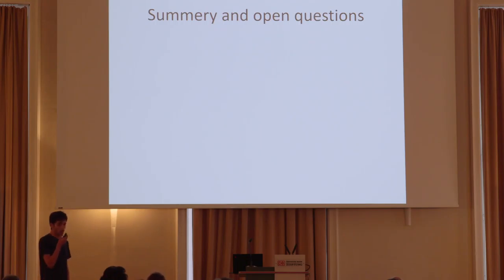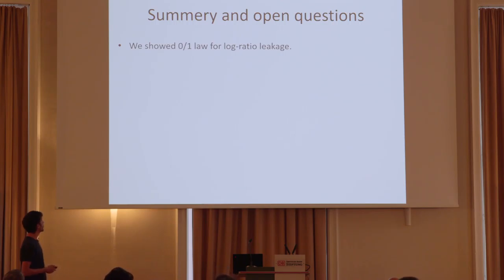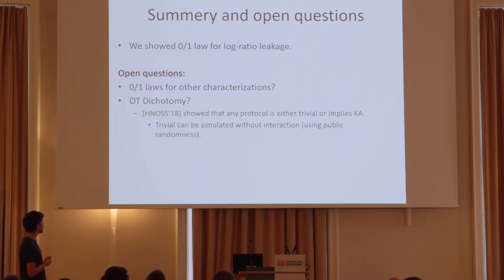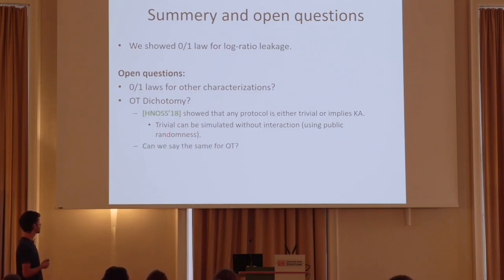To summarize, we showed a 0-1 law for log-ratio leakage and an application for private computations. For open questions, we may want to find more 0-1 laws for other characterizations of channels and find an OT dichotomy. Eitner, Nissim, Omrisha, Altiel, and Silbach showed that any protocol is either trivial or implies key agreement, where their definition of trivial is that the protocol can be simulated without interaction using only public randomness. We really want to say similar things for OT, so it would be great to answer this question.